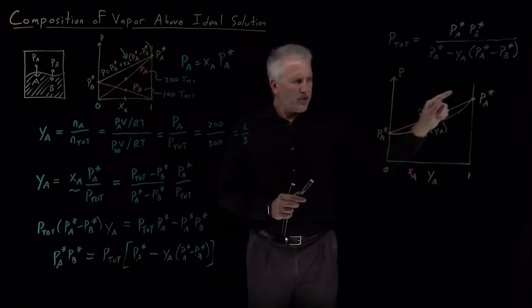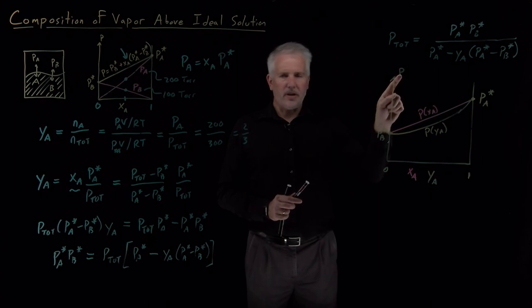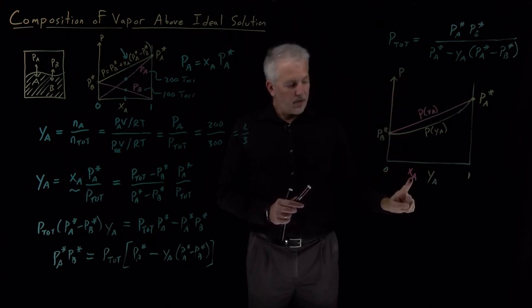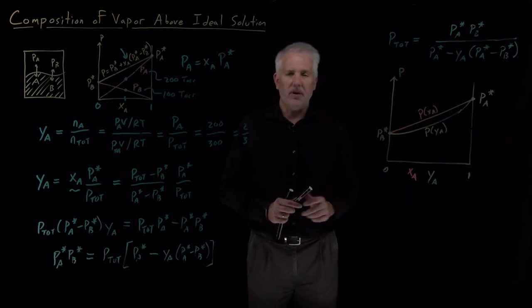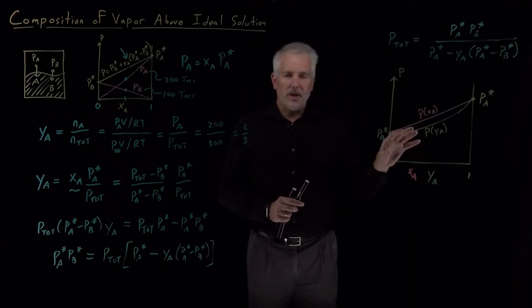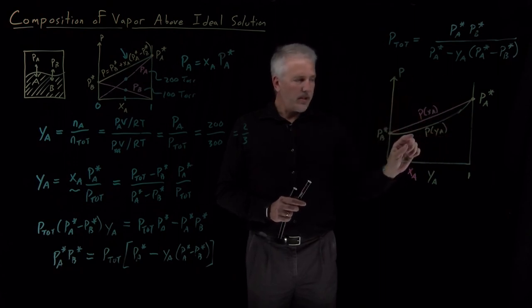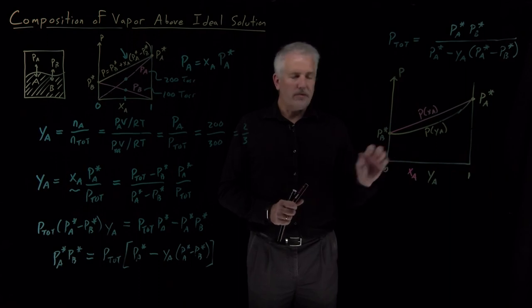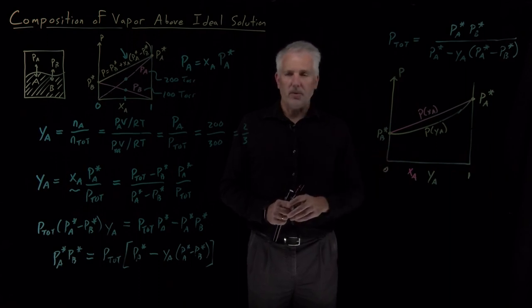So I have two different equations, two different curves for how the total pressure depends on mole fraction because mole fraction in the liquid and mole fraction in the vapor are not equal to each other. That itself has some interesting consequences, and if we think carefully about how to interpret this diagram, we'll learn a lot about the equilibrium between liquids and vapors above a solution. That's what we'll do next.